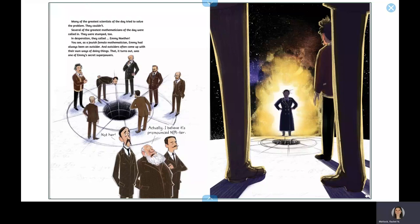You see, as a Jewish female mathematician, Emmy had always been an outsider, and outsiders often came up with their own ways of doing things. That, it turns out, was one of Emmy's secret superpowers.